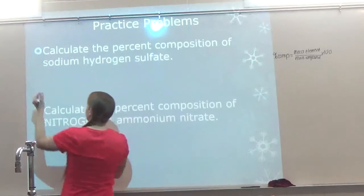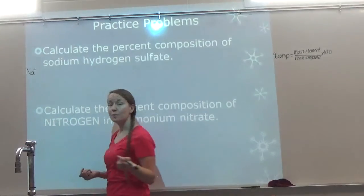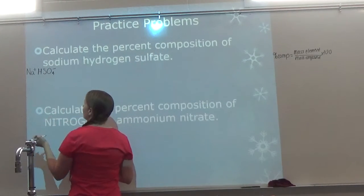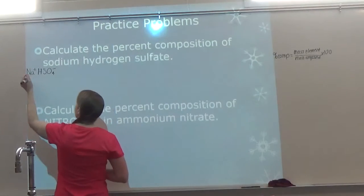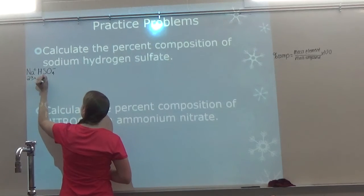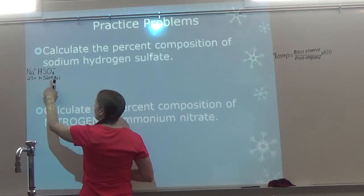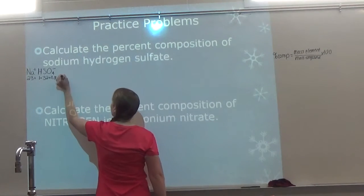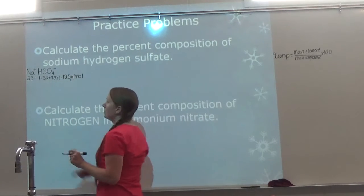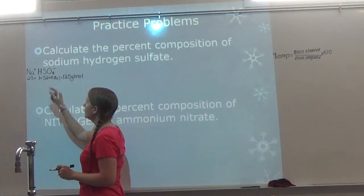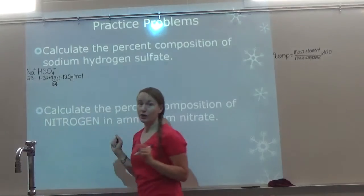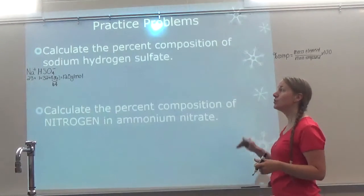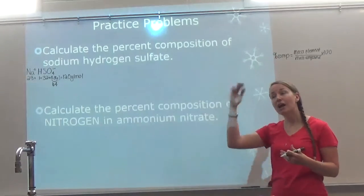Calculate the percent composition of sodium hydrogen sulfate. There's no formula and no masses given. We're going to pull masses from the periodic table, but you have to be able to write the formula. Sodium is Na with a positive 1 charge. Hydrogen sulfate is on your polyatomic ion sheet: HSO4 with a negative 1 charge. Positive 1 and negative 1 cancel, giving NaHSO4. Now let's get the masses: sodium is 23, hydrogen is 1, sulfur is 32, oxygen is 16 but I have 4, so 16 times 4 equals 64. Adding everything together gives 120 grams per mole for the whole compound.